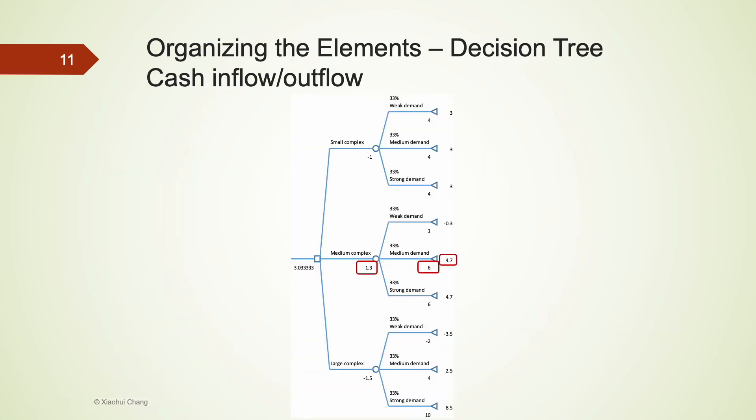When we draw the decision tree, we also present payoff and probabilities in the tree. To avoid confusion, it is a good practice to record and keep track of the cash inflow and outflow that happen between any two nodes.